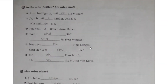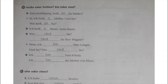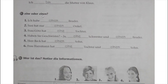Number ten: fill in heiße/heißen and bin/sind. Entschuldigung, heißen Sie Müller? - Ja, ich heiße Müller. Und Sie, wie heißen Sie? - Ich heiße Bauer, Anna Bauer. Wer sind Sie? Sind Sie Herr Wagner? - Nein, ich bin Herr Langer. Und Sie, wer sind Sie? - Ich bin Frau Schulz, ich bin die Mutter von Klaus.